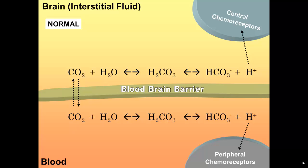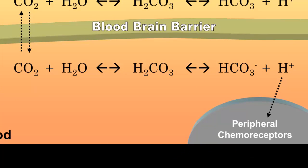So during normal conditions, the rate of ventilation is determined largely by partial pressure of carbon dioxide. Carbon dioxide reacts with water to form carbonic acid, which quickly dissociates to bicarbonate and a proton.